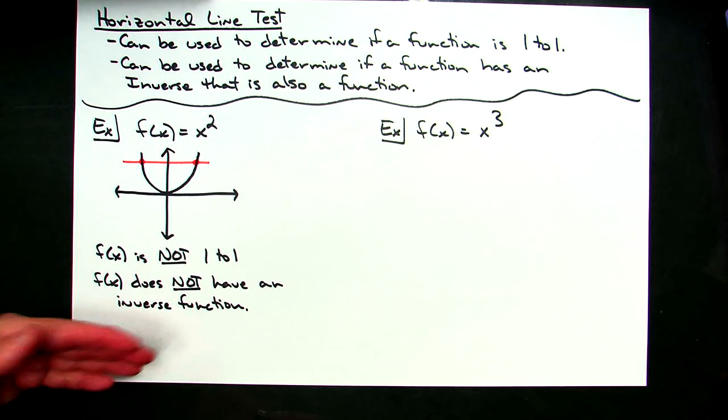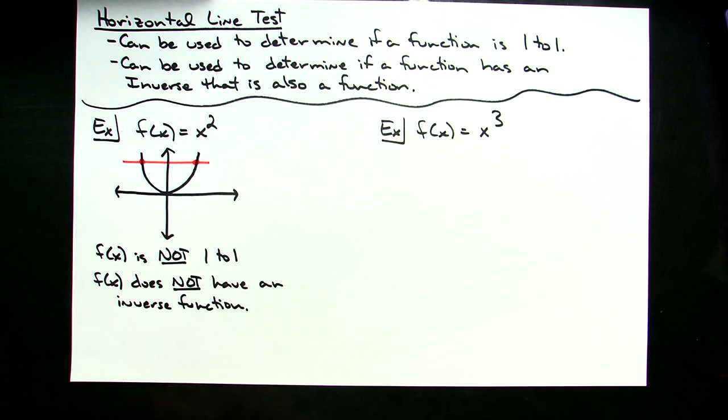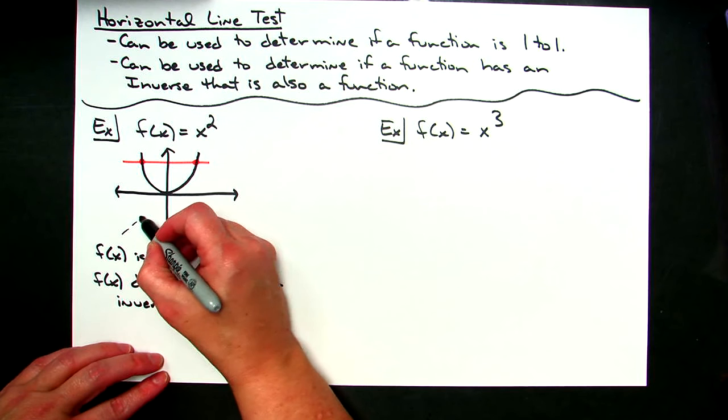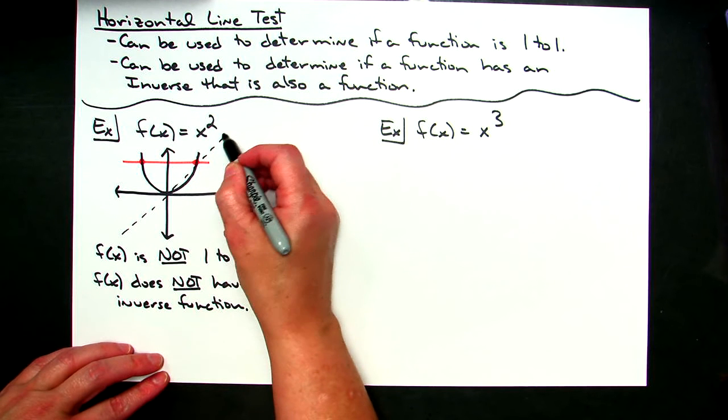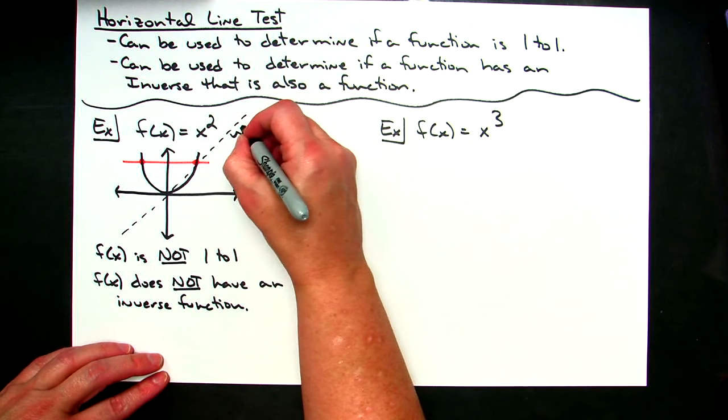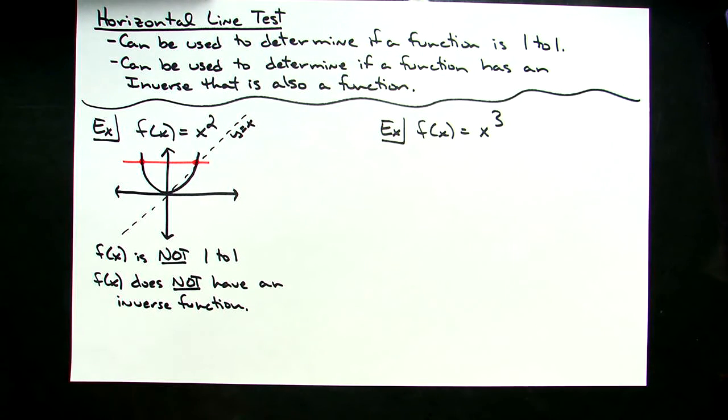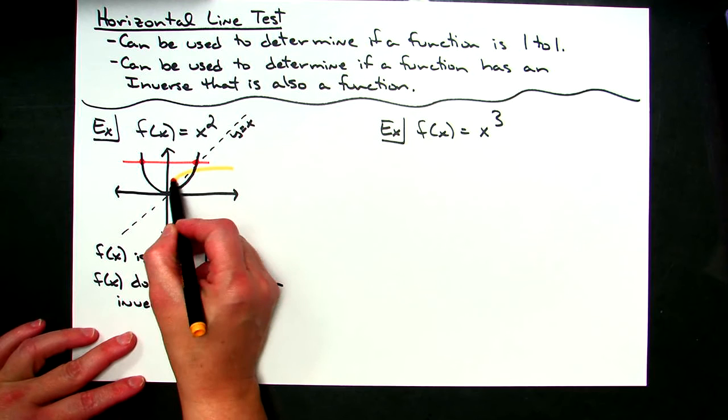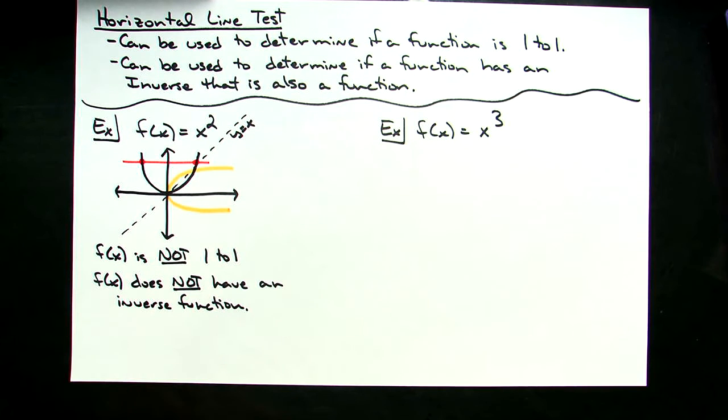a function and its inverse should be a reflection over the y equals x line. So if I do a rough little sketch here, putting that y equals x line in so that we can just kind of get a feel for this, that clearly is the y equals x line. Now, if I were to reflect f of x across that, again, just a rough sketch here, it's going to look something roughly like that, horizontal parabola.